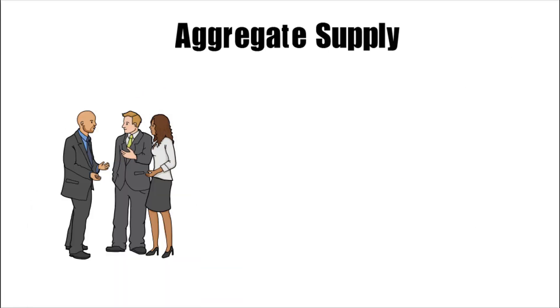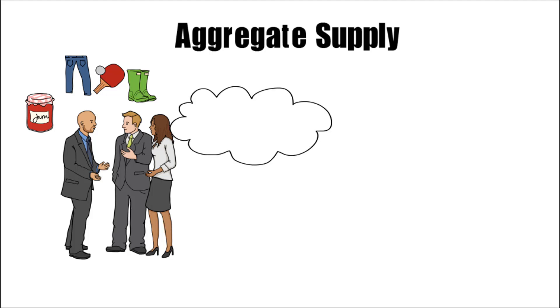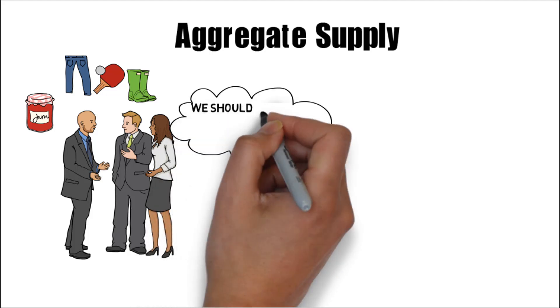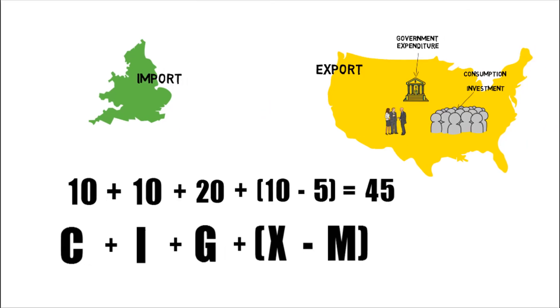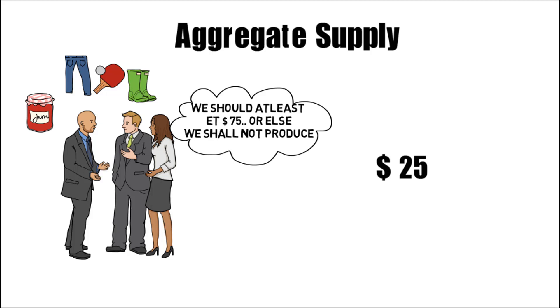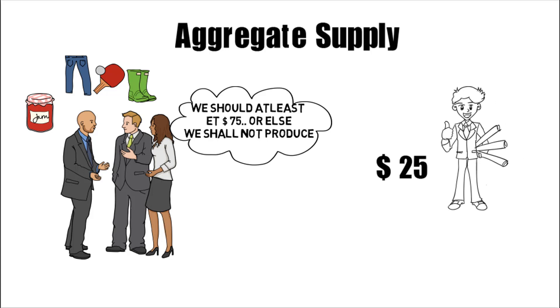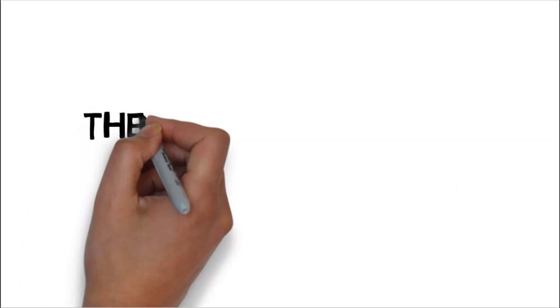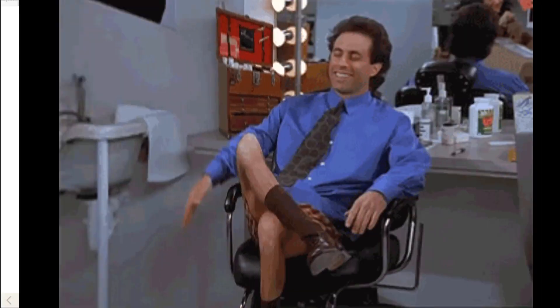On the other hand, aggregate supply means the amount of revenue that entrepreneurs should get if you want them to produce output. Hence, if entrepreneurs expect $75 and you are willing to pay only $45, they won't produce. However, if they expect at least $25 and you are offering $45, they'll happily produce. If you are still confused, do watch the video on the theory of employment which I'll be uploading next week, and all your doubts will be cleared.